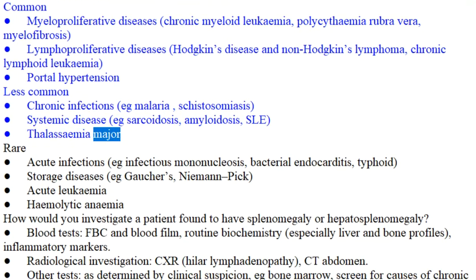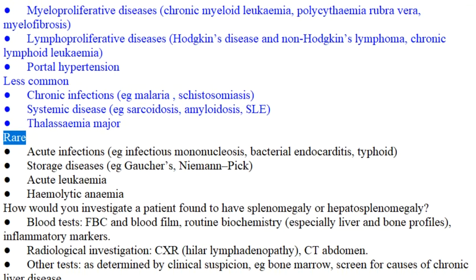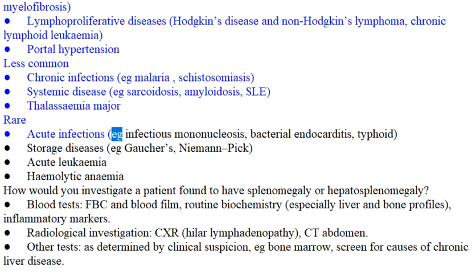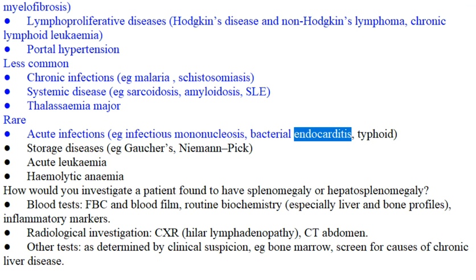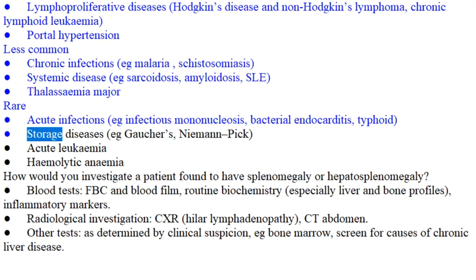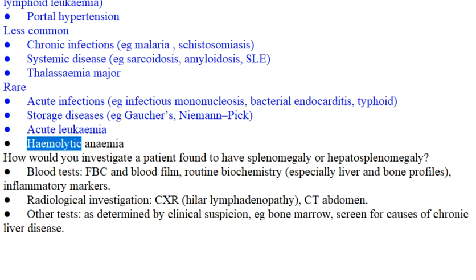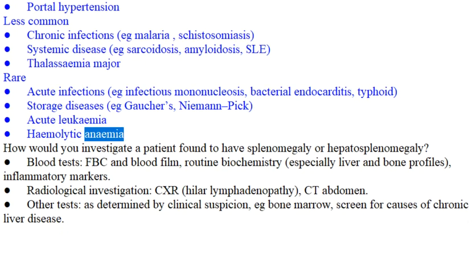Thalassemia major. Rare causes include acute infections, e.g. infectious mononucleosis, bacterial endocarditis, and typhoid; storage diseases, e.g. Gaucher's and Niemann-Pick disease; acute leukemia; and hemolytic anemia.